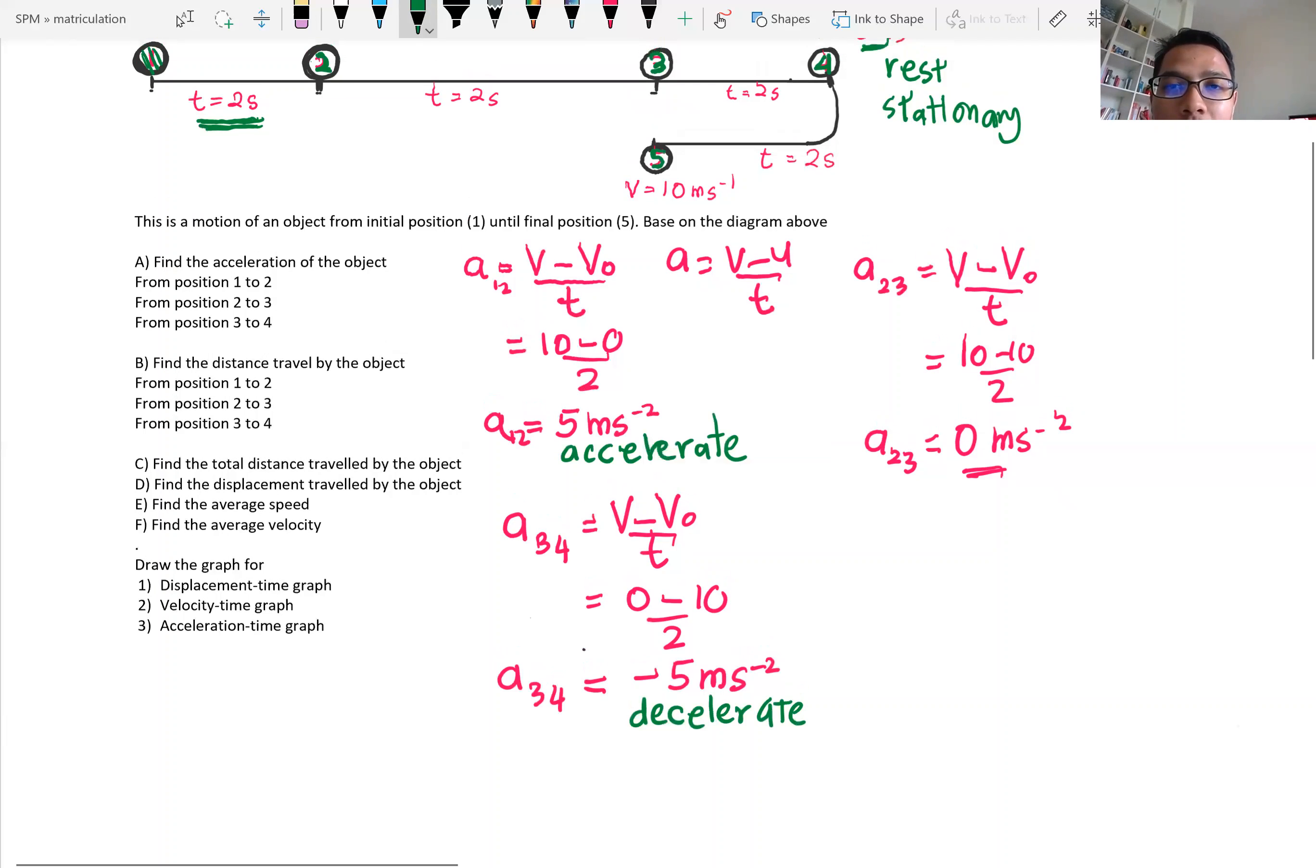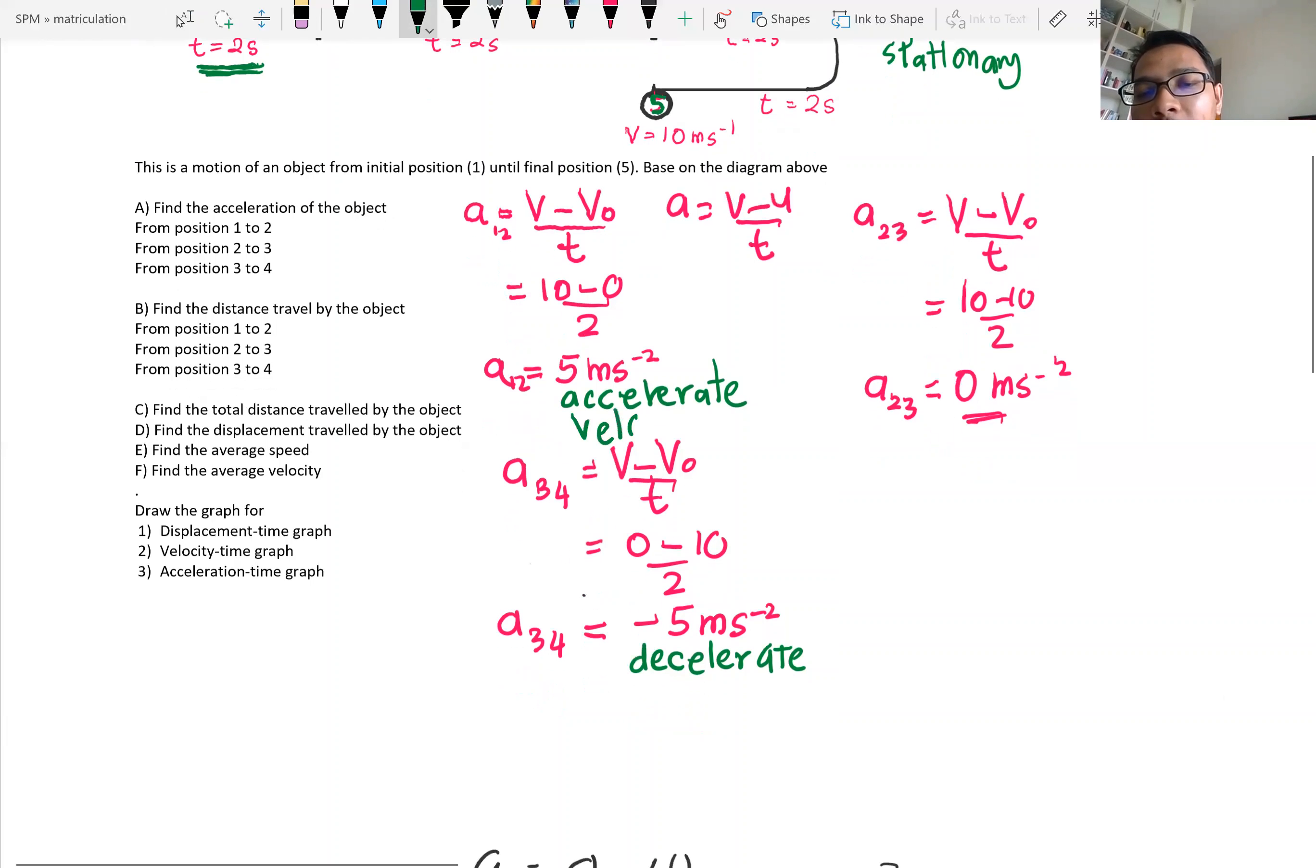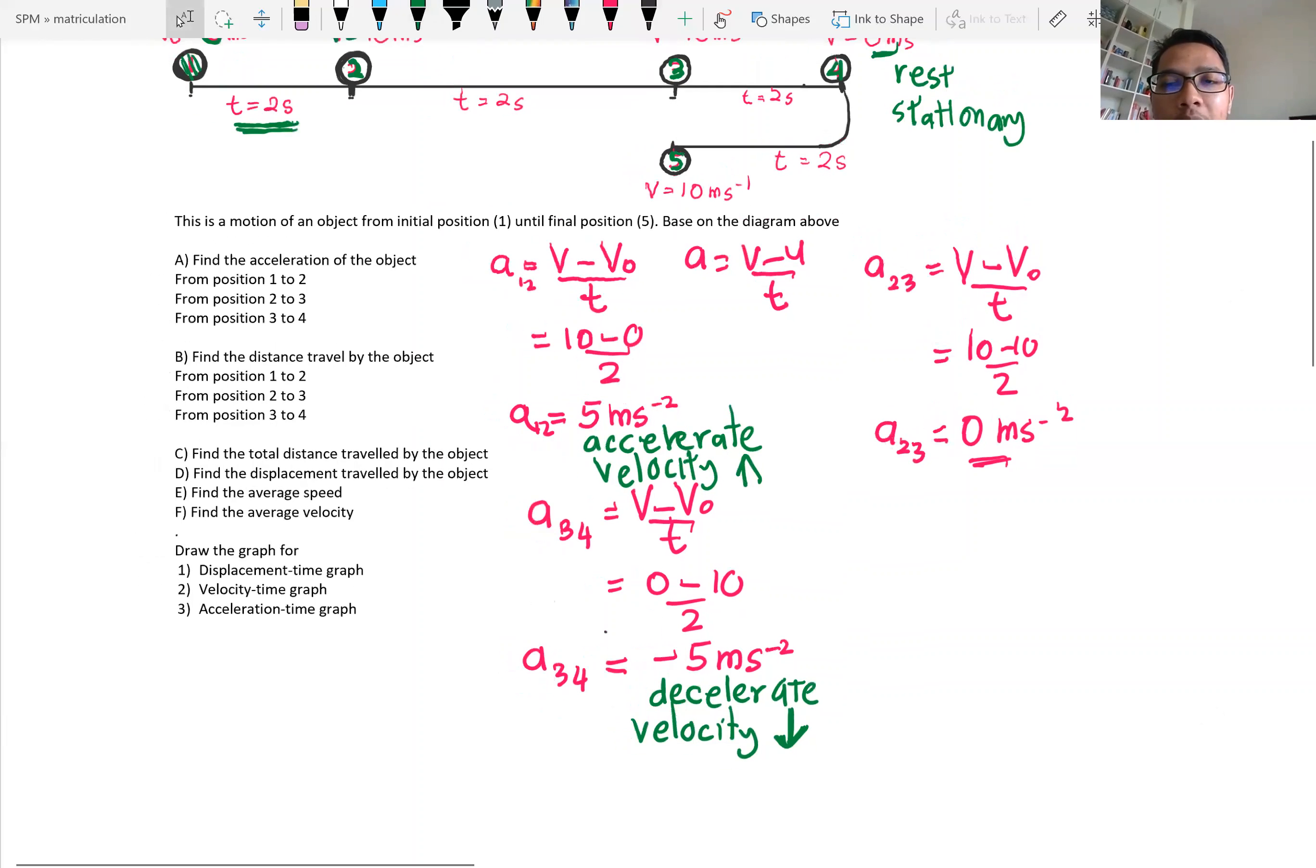So the positive and negative here does not show you the direction. The positive and negative here, when positive the velocity increases, when negative meaning the velocity is decreased. Distance still changes, displacement still changes.